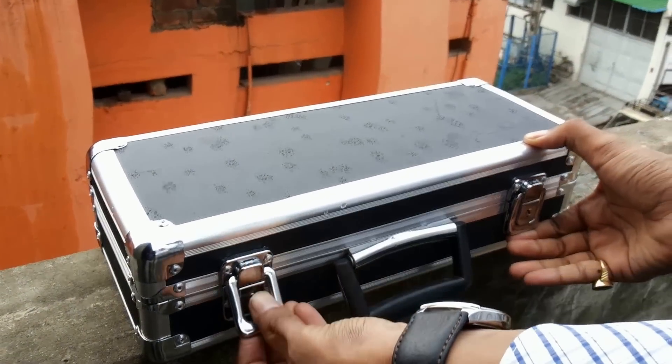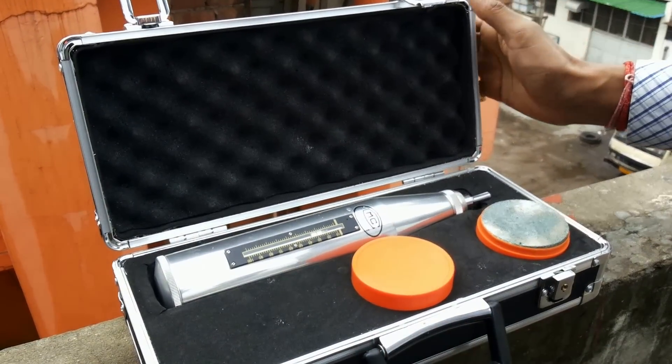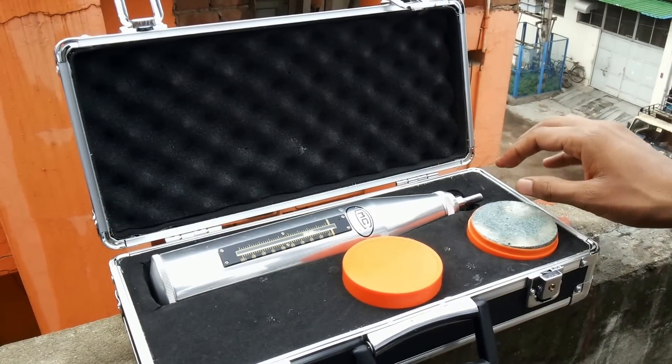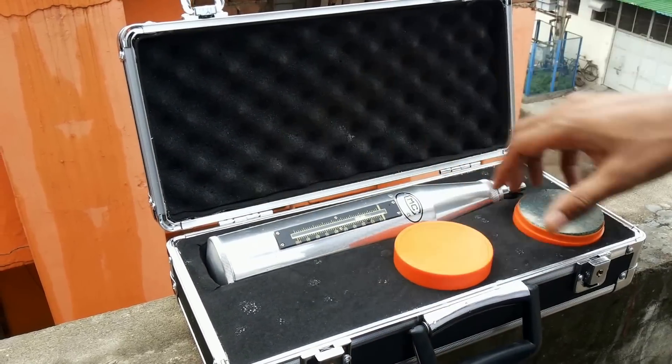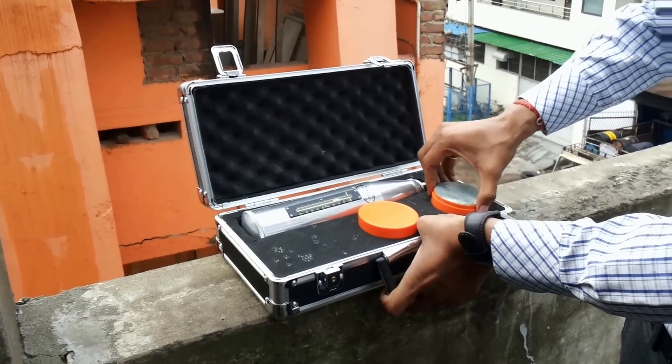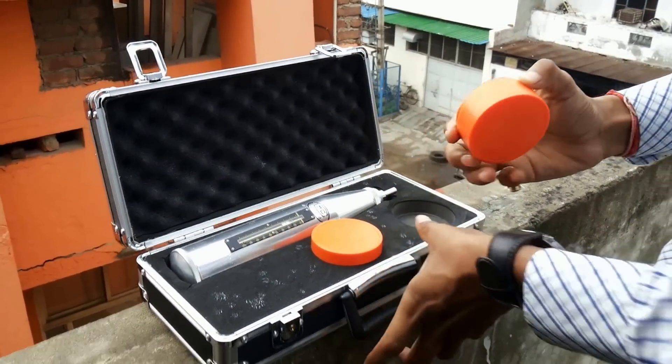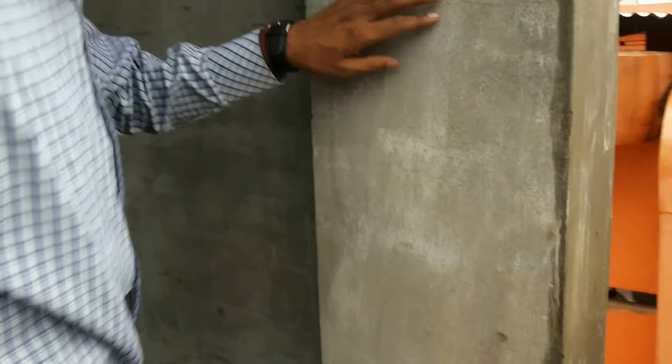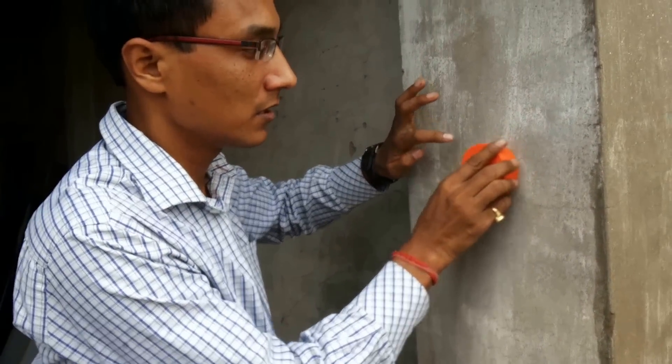This is a simple instrument used for concrete strength testing, the rebound hammer. At the test point, first of all smooth the surface like this.